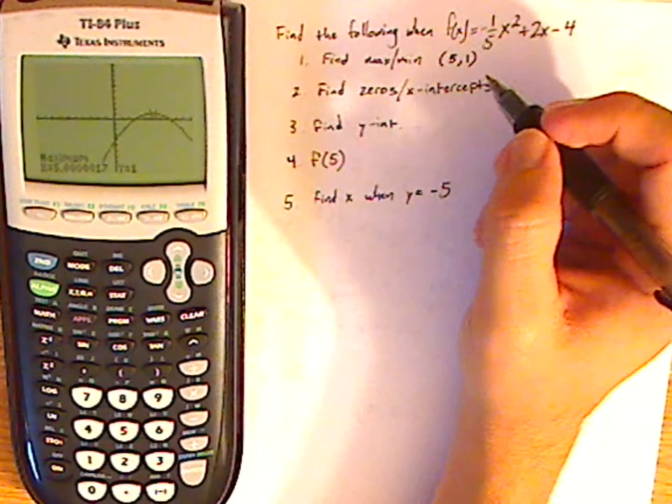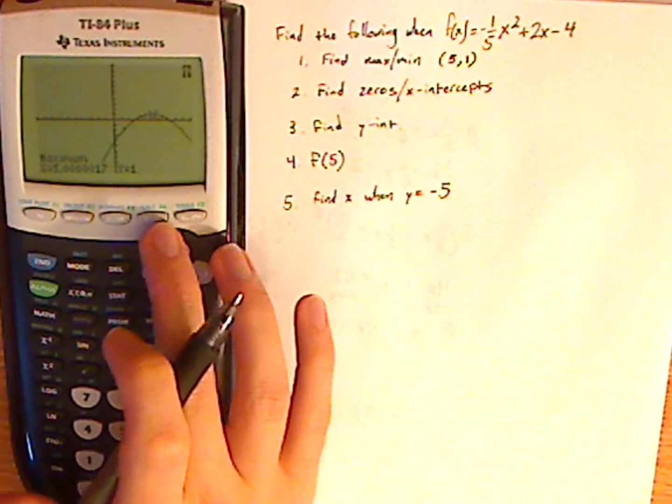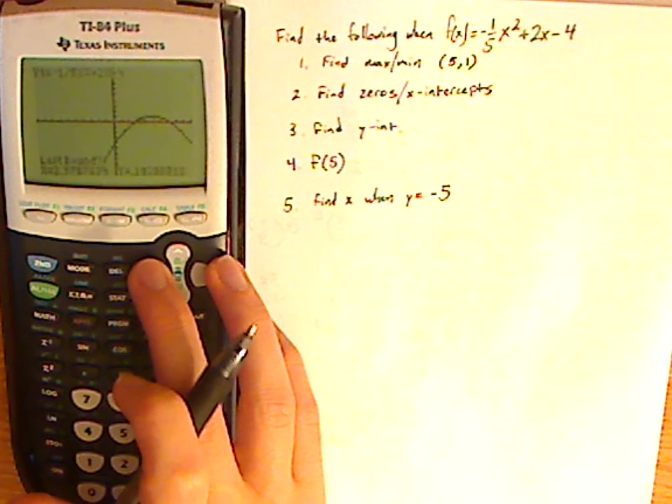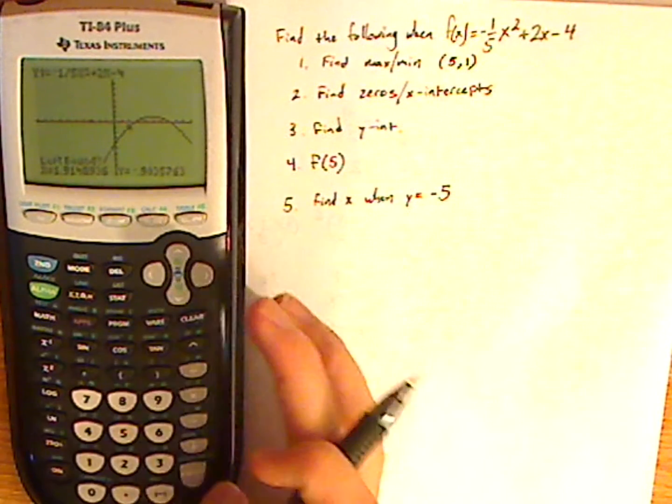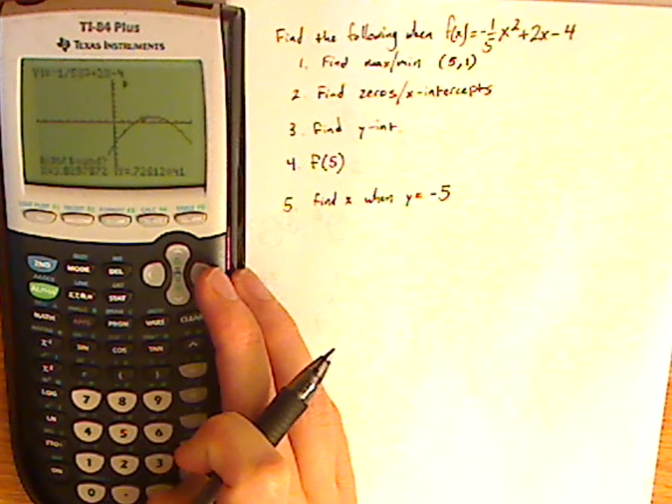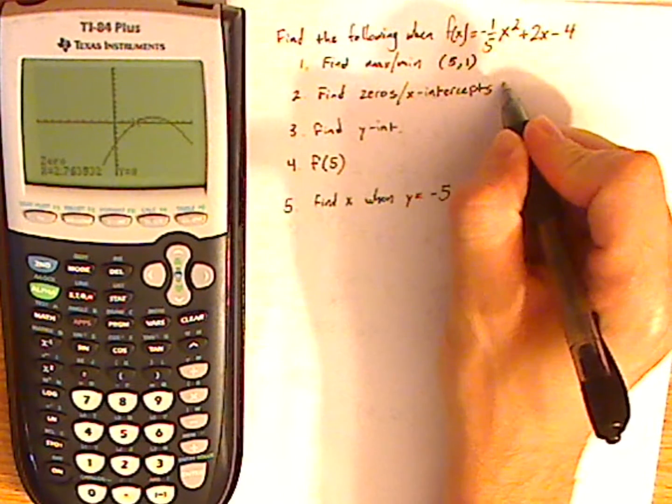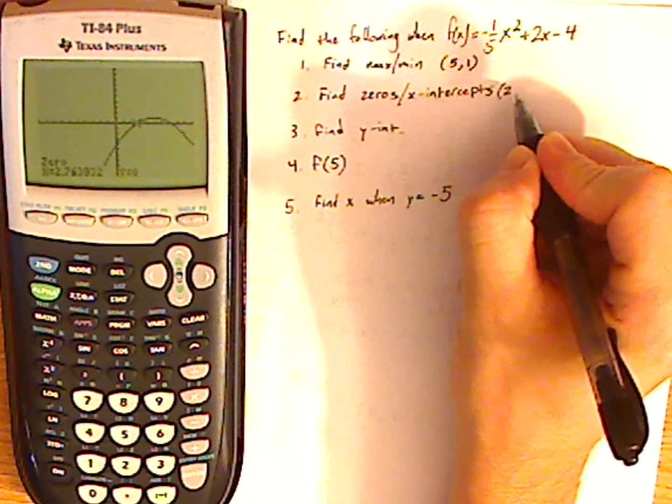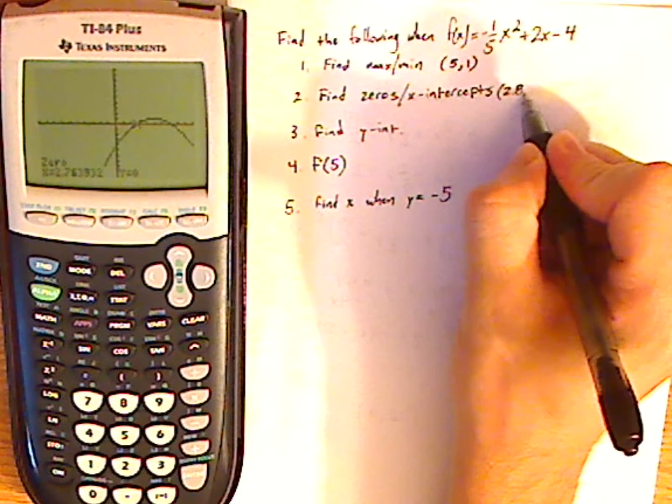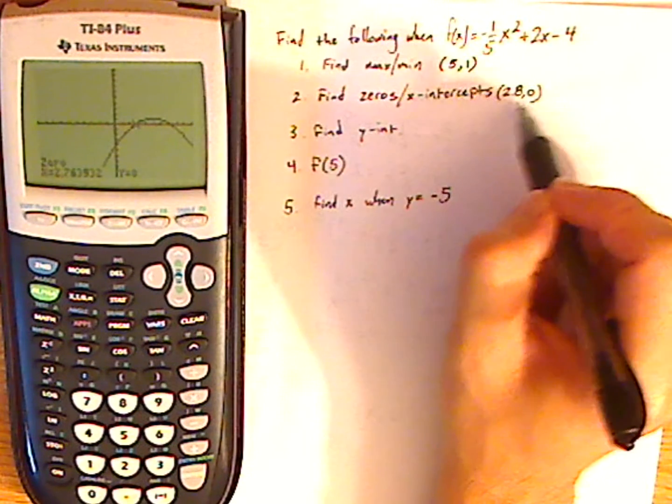Alright, so to find the zeros, which is another word for x-intercepts, you're going to go to 2nd, and then trace or calc, zero. So I'm going to go left to the zero. So I'm going to find this x-intercept first, so click enter, and then I'm going to go right. And it looks like it's approximately, I'm going to round to the first decimal place. It's 2.76, so since it's 6, I'm going to go up, so it would be 2.8, 0. You've got to remember those x-intercepts and zeros are actually points, so I have to write them as points.